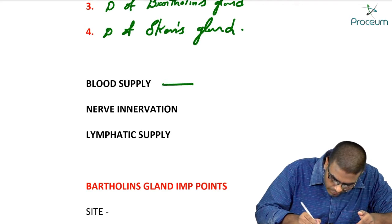Bartholin's ducts are lined by columnar epithelium — a very important MCQ. These ducts open into the vestibule at a specific location: at the junction of the anterior two-thirds and posterior one-third of the vulva, in a groove between the labia minora and hymen.